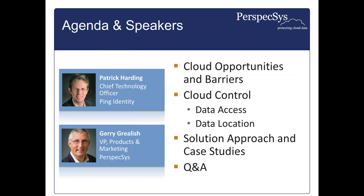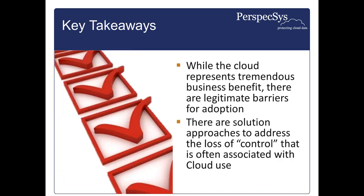For today's agenda, we'll start with a summary of both the business benefits and potential barriers facing the enterprise as it considers public cloud adoption. Following this, we'll review different methods of cloud control that an enterprise can leverage to address broader compliance and security needs. Lastly, we'll close with some solution approaches and a case study before wrapping up with questions and answers. Key takeaways include shedding light on opportunities and barriers posed by public cloud adoption, and that there are valid, tested, and proven approaches to maintain control when the enterprise adopts cloud technologies.